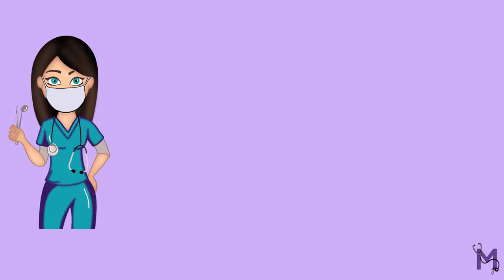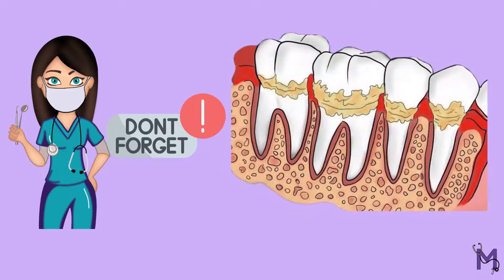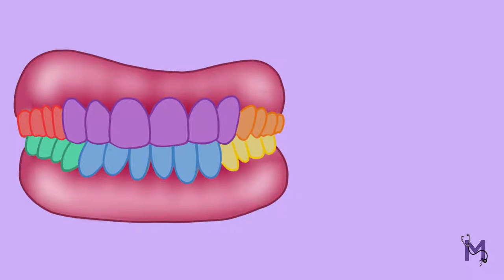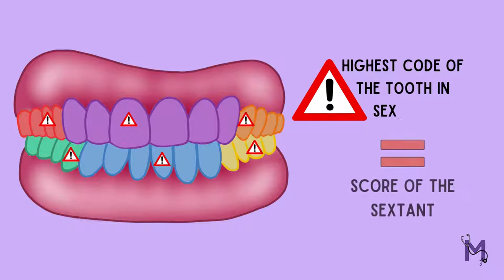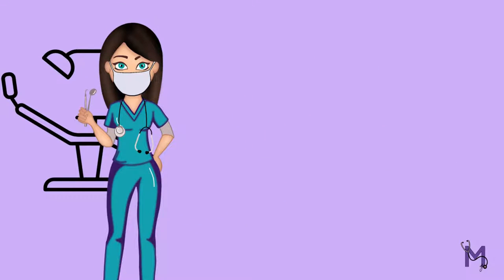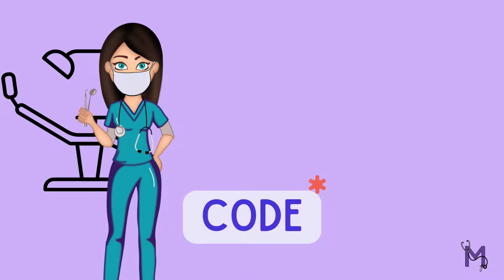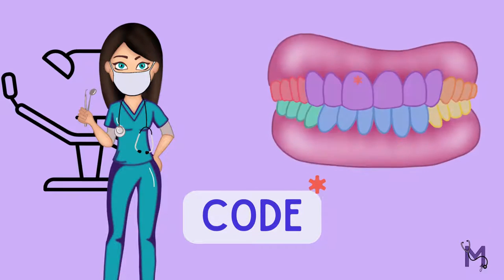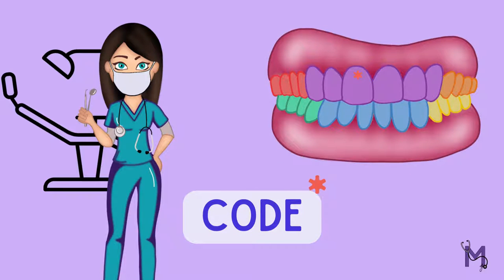There are certain points we must remember while performing the periodontal screening and recording index. After the clinical examination, the code for each sextant will be the code of that particular tooth with the highest code in that sextant. Also, the code asterisk, if applicable to any sextant in a patient, is given along with the code for that particular sextant.